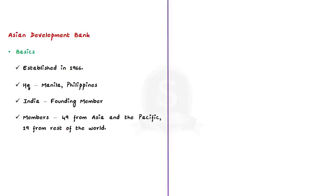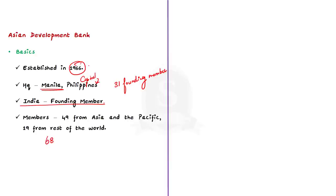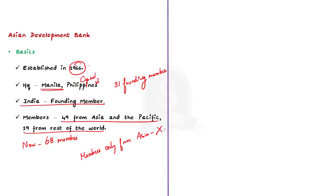The Asian Development Bank was established in the year 1966 in Manila, which is the capital of Philippines. It was established with 31 founding members, and India is one of the founding members. Currently, ADB holds 68 members — 49 are from within Asia and Pacific, and the remaining 19 members are from outside. So if a prelims question asks whether ADB members are only from Asia, you must know that the bank has members both from inside and outside Asia.